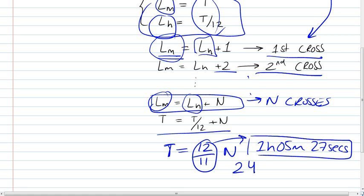If you divide 24 hours of one day by this number, 12 over 11, you will get that it will overlap 22 times. So this is your solution. Thank you.